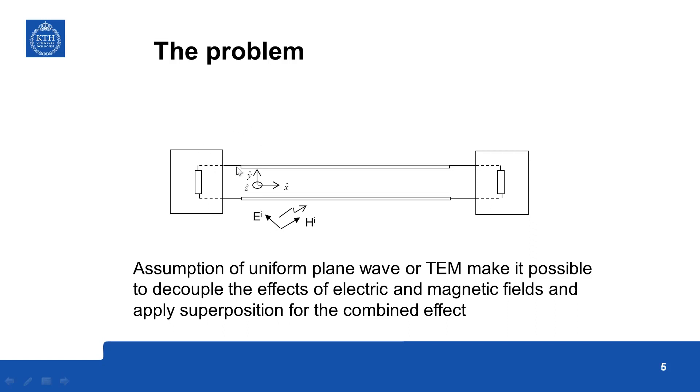So here assume that you have two wires, it can be component lead or PCB tracks with some loads at the end and you have a TEM wave incident, transverse electromagnetic wave in which electric field and magnetic field are in a plane perpendicular to the direction of propagation.